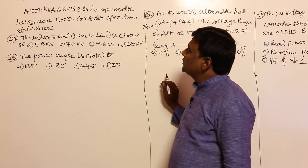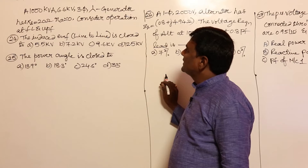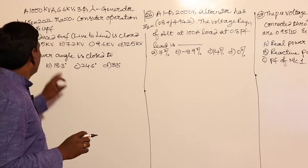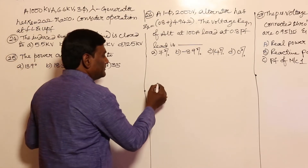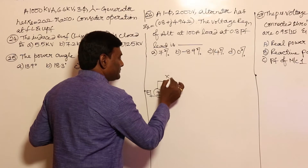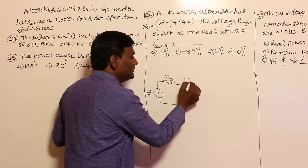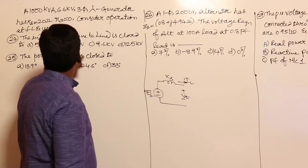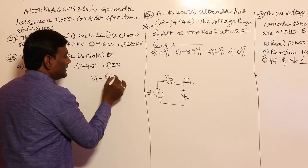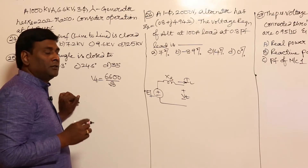A 1000 kVA, 6.6 kV, three-phase star-connected generator has synchronous reactance of 20 ohm; armature resistance is neglected. Consider operation at full load, unity power factor. In an alternator, Vt will be maintained constant independent of the load, so Vt is rated at 6.6 kV line-to-line. Per phase, Vt equals 6600 divided by root 3.